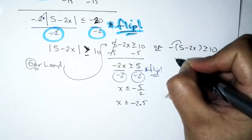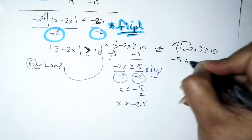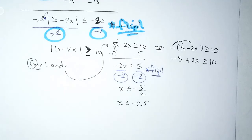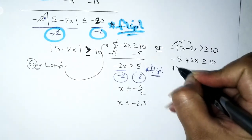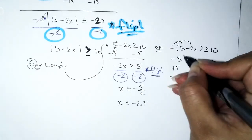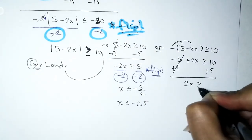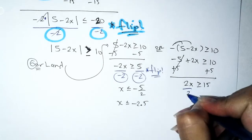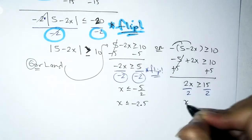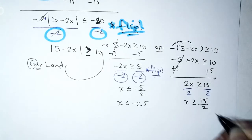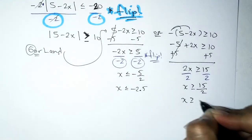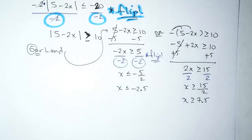Second inequality: distribute the negative to get −5 + 2x ≥ 10. Add 5 to both sides: 2x ≥ 15. Divide by 2 — no flipping this time — giving x ≥ 15/2, which is 7.5.